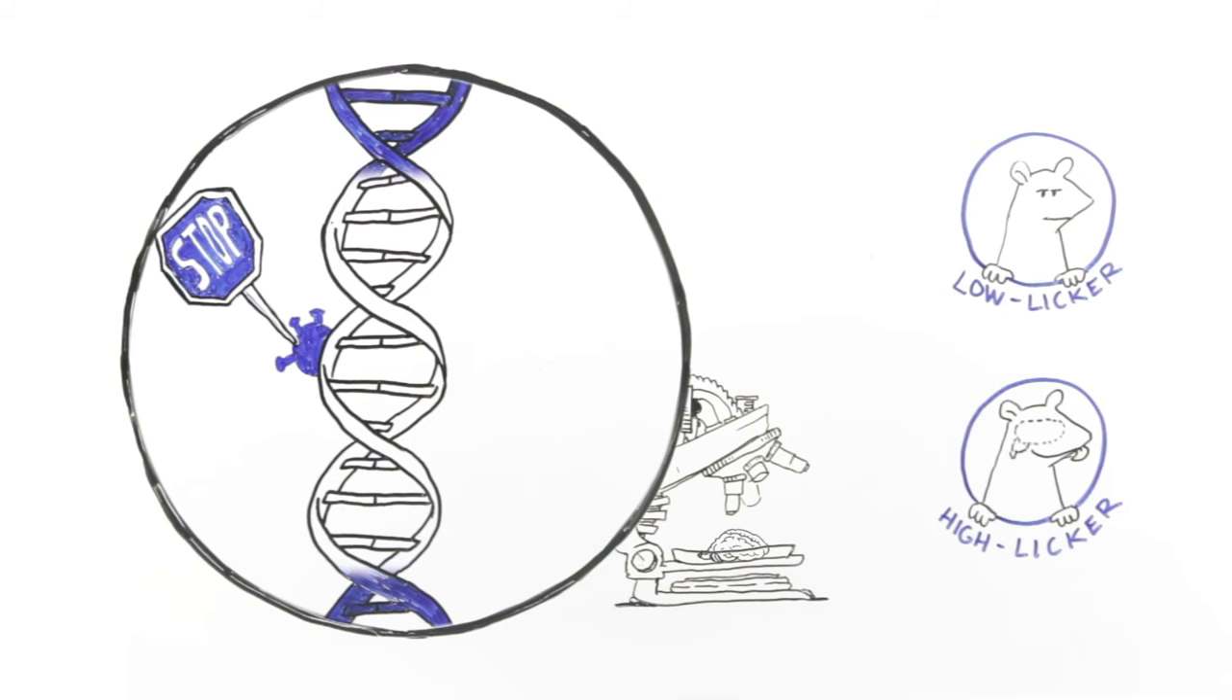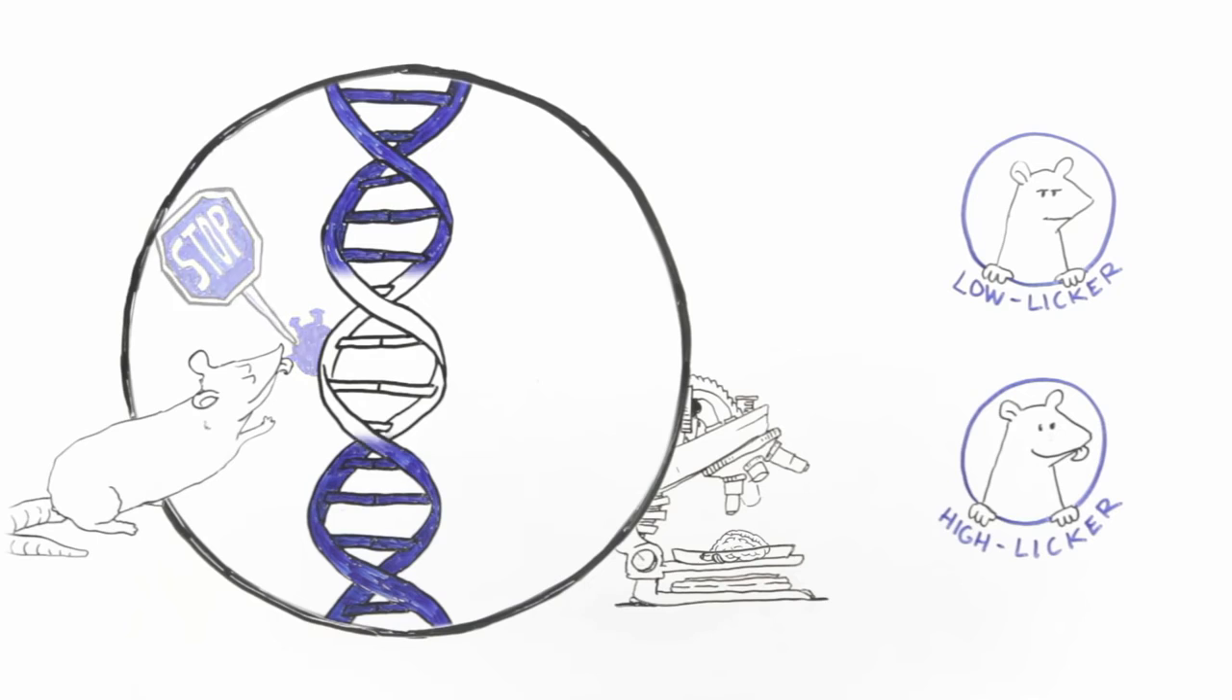Newborn rat babies have clusters of molecules called methyl groups attached to these genes. These methyl groups silenced a gene, effectively switching it off. The researchers discovered that while the methyl groups in rats from low-licking mothers were still attached, in the rats from high-licking mothers, these methyl groups had disappeared. This was also true for the rats that had been adopted by high-licking rat mothers. The care these rats received from their mothers actually physically altered their genetic expression.